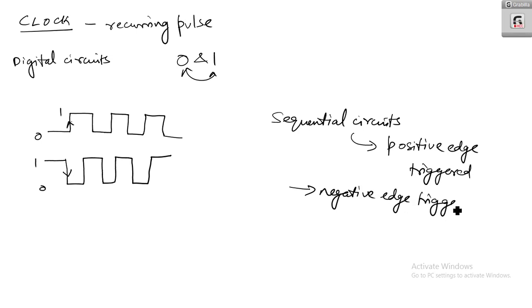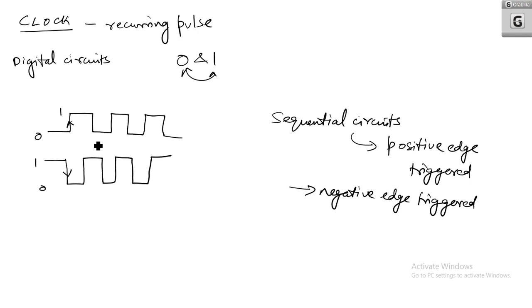Hope you have got the difference between positive edge triggering and negative edge triggering. This clock pulse is generated from a function generator. A function generator is an electronic circuit which generates these clock pulses.